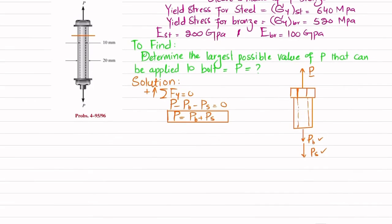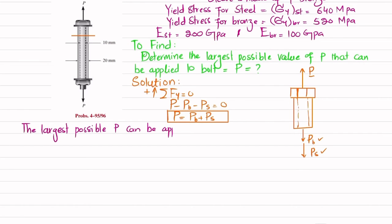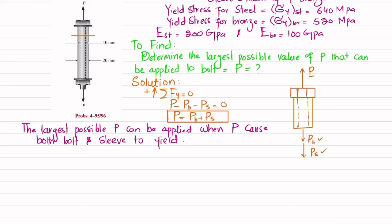Now, to find Pb and Ps, we are interested in the largest load. The largest possible P can be applied when P causes both the bolt and the sleeve to yield. That is the maximum load P that can be applied.